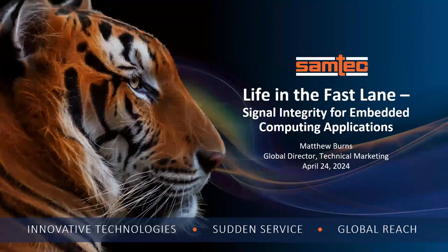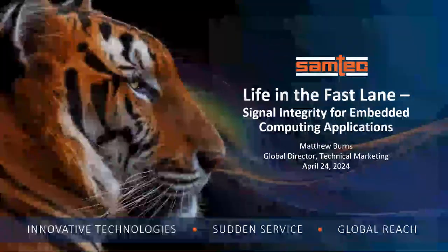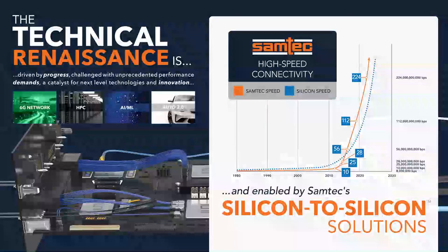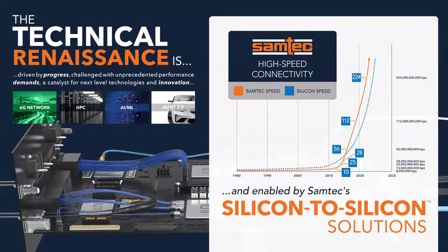Before we start getting into SI, I'm assuming that many of you are familiar with Samtec, but just in case you're not, we wanted to take a minute or two and talk about where Samtec is as a company. We've been around in the business for nearly 50 years. We started out back in the mid-70s focusing on providing standard and custom 2.54 millimeter or 0.1 inch pins and plastic pins and headers. Our business has evolved to the point where we're one of the premier players in providing high-performance interconnect solutions across a number of industries.